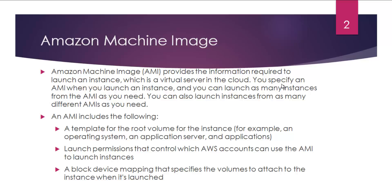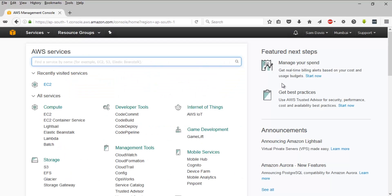If you remember when we were trying to create an EC2 instance for the first time, on the very first screen we were given an option to choose an AMI. You can select an AMI based on region, OS flavors, architecture — whether it is 32-bit or 64-bit — and so on. Let me show you the whole thing in the AWS console.